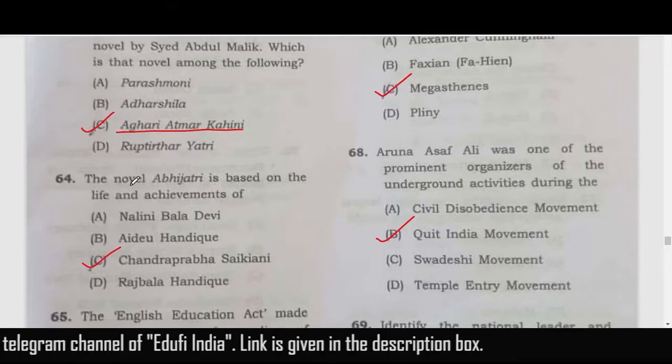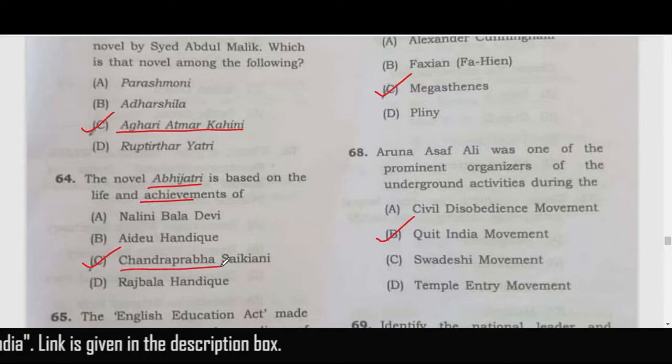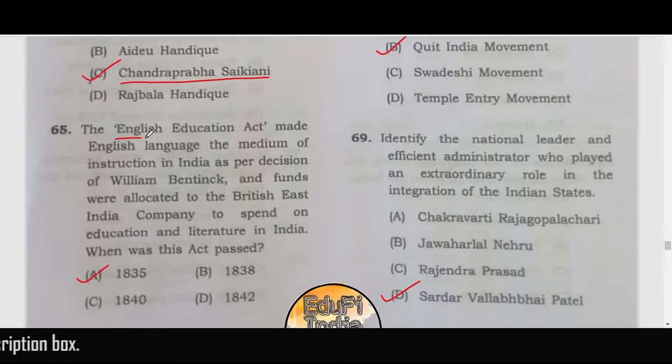The novel Abhi Jatri is based on the achievements of Chandraprabha Saikiani. The next question is related to the English Education Act, which came in 1835 — so option A is the correct answer.